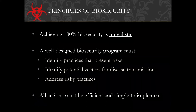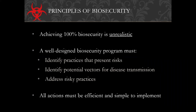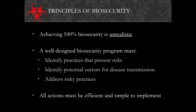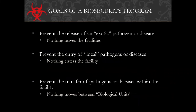Having 100% biosecurity is unrealistic and impractical. The higher the level of biosecurity, the less practical it is to actually work there. You want a well-designed, solid, robust biosecurity program where you look at current practices that present risks, identify potential vectors for disease transmission, and address risky practices that involve sharing tools, equipment, and personnel. All actions must be efficient and simple to implement, otherwise your processes will break down. Your goals are: prevent release of exotic pathogens out of the facility; prevent entry of local pathogens into the facility; and prevent transfer of pathogens between biological units within the facility.